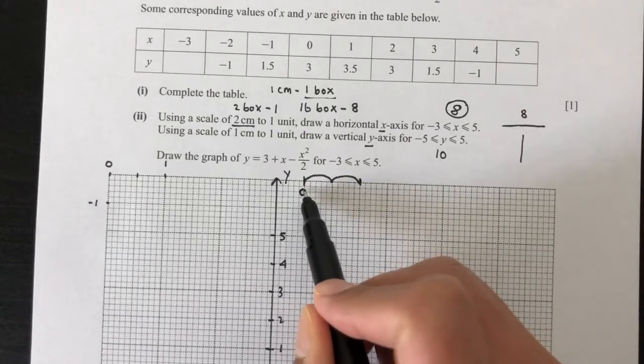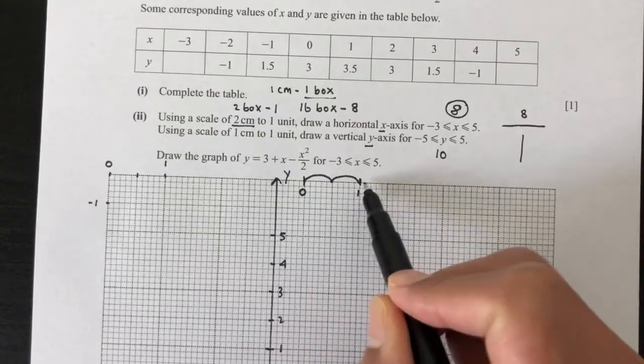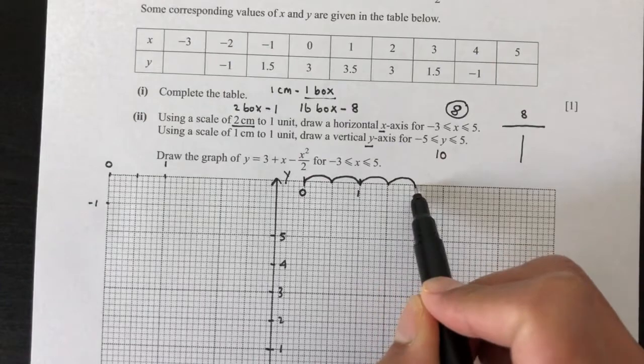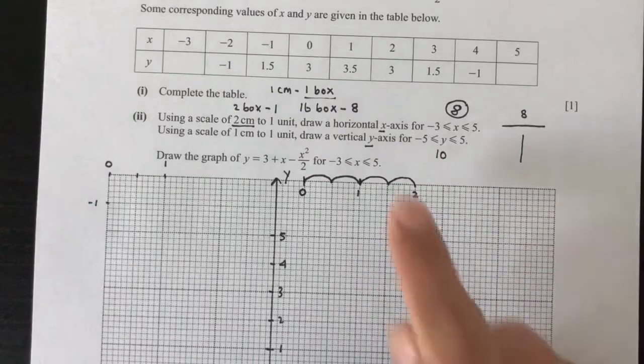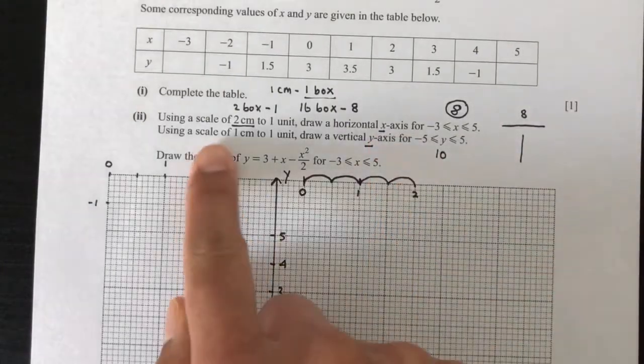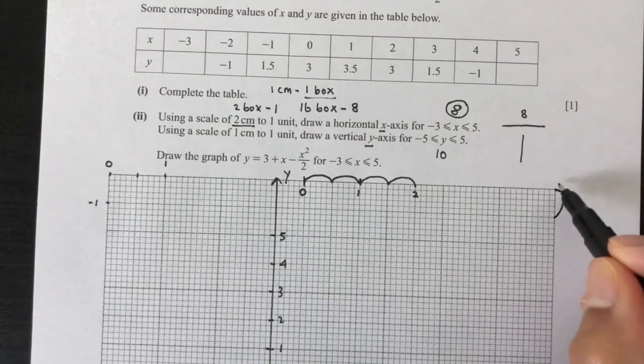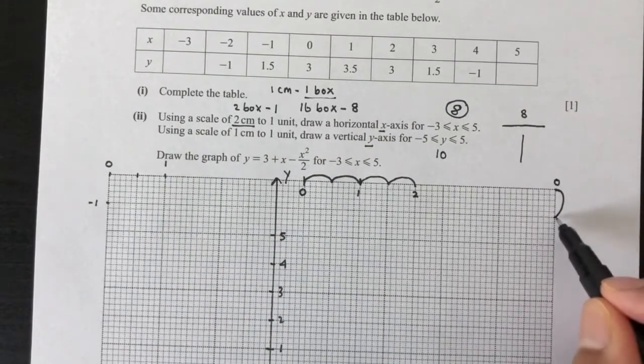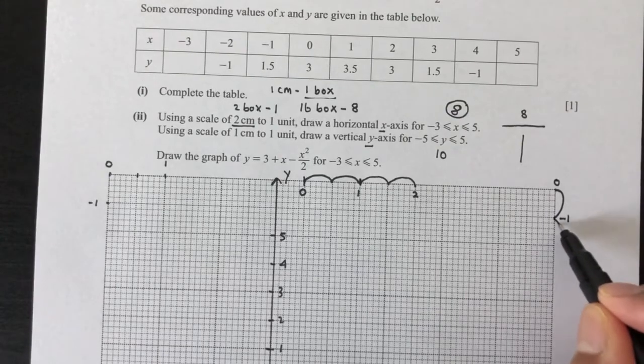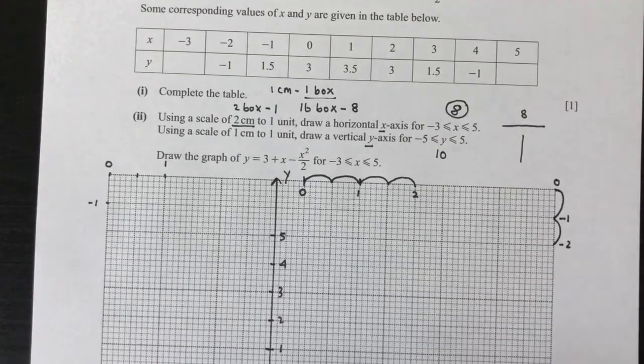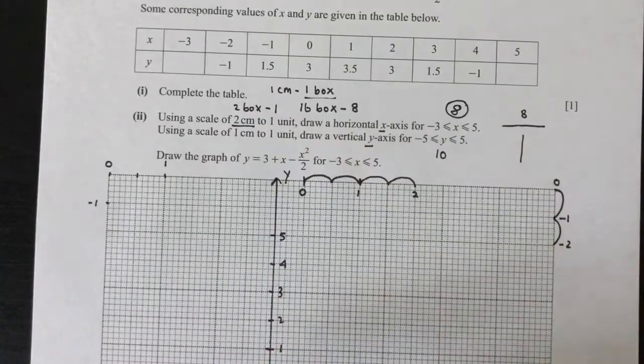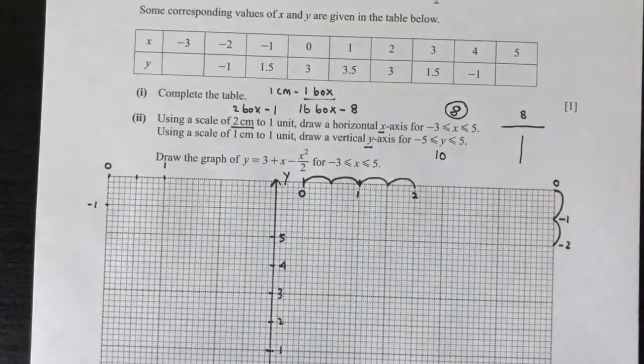So 2 centimeters will be 1 unit. Meaning, if that was 0, 1 unit will be 1. So continue. 2 boxes, that will be 2. This is what it means for your x-axis. But for your y-axis, 1 box is 1. So if that was 0, if you go down, that will be -1. 1 box will be -2. That is given to you. You have to use that scale to draw your x and your y-axis.